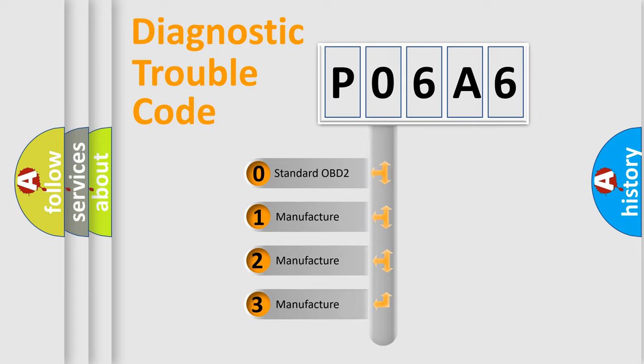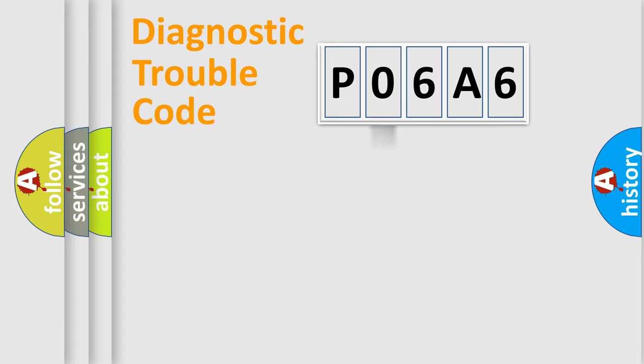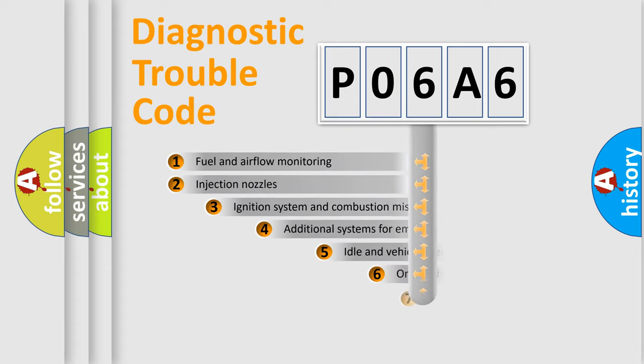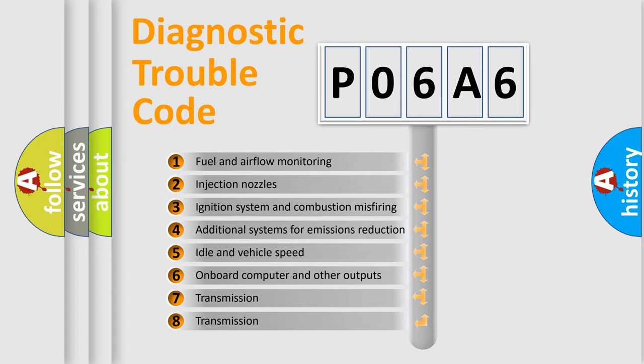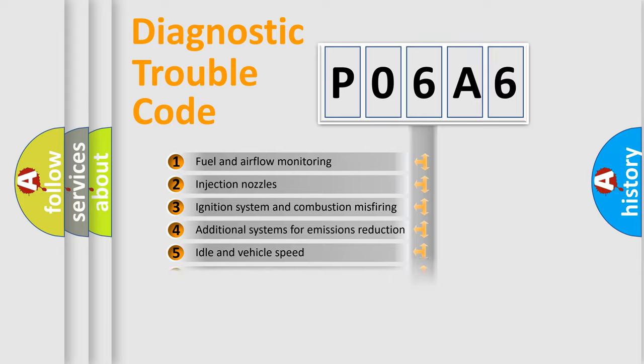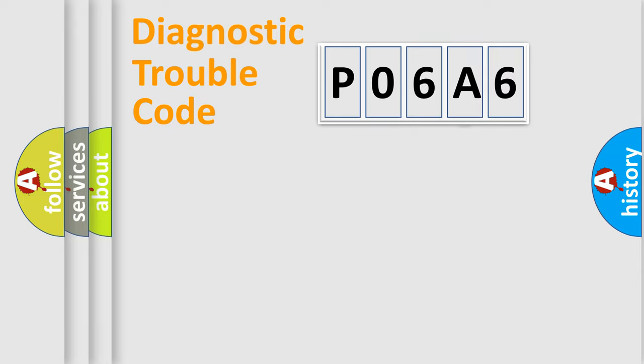If the second character is expressed as zero, it is a standardized error. In the case of numbers 1, 2, or 3, it is a more specific expression of the car-specific error. The third character specifies a subset of errors. The distribution shown is valid only for the standardized DTC code.